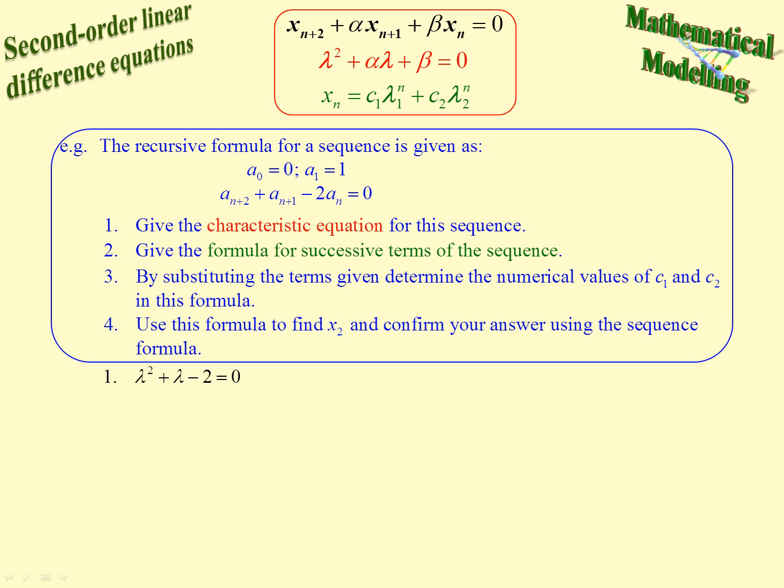Now it says 2: Give the formula for successive terms of the sequence. Well we're going to solve that quadratic equation and take those values of lambda and substitute back into this formula. The order does not matter. It does not matter which you choose as lambda 1 and which you choose as lambda 2.